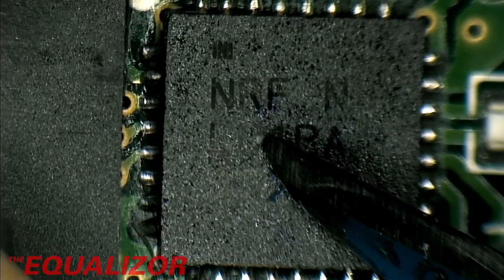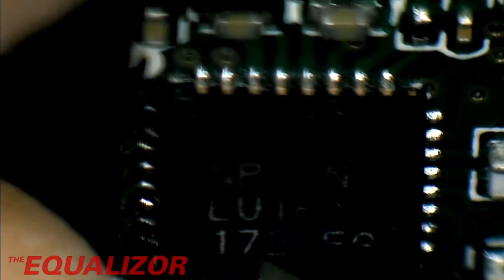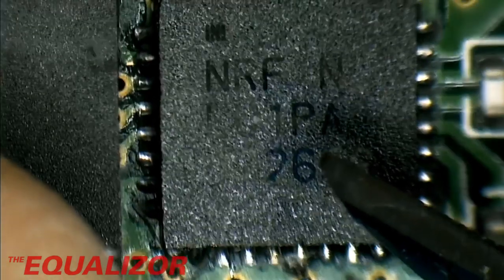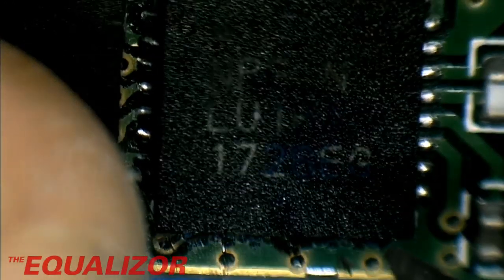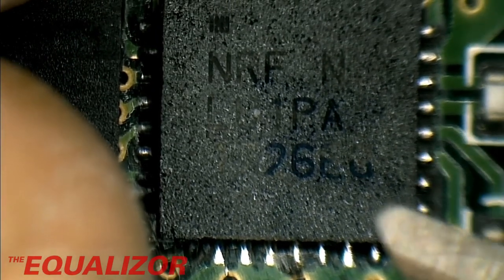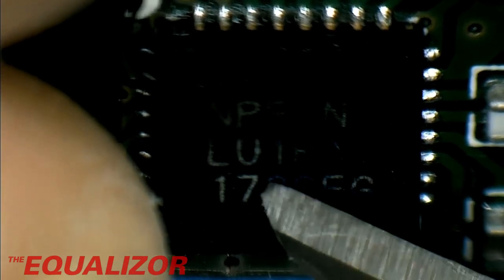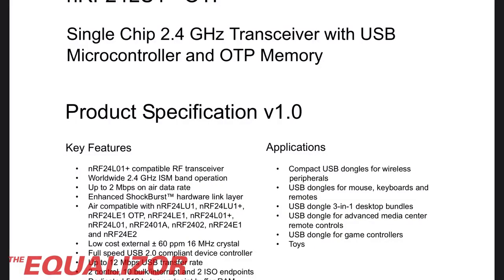This is what's doing all the grunt work, this NRF chip. And it says NRF, I think it's just NRF N. Can't really see it very well on the microscope camera. And then it says LU1PA1726EG. A quick Google reveals that the NRF24LU1 is a single chip 2.4 gigahertz transceiver with USB microcontroller and OTP memory. If we have a look at the applications note, compact USB dongles for wireless peripherals, mice, keyboards, remotes. Yeah, this is a dedicated dongle chip, basically.